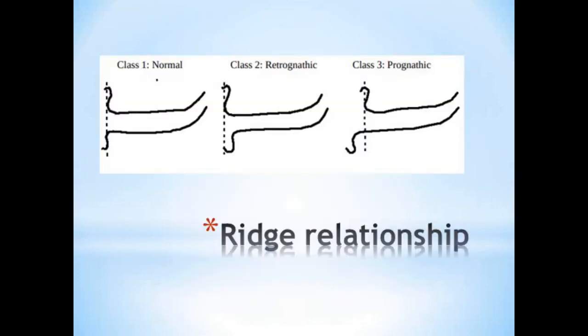Next is the ridge relationship: Class 1 is normal, Class 2 is retrognathic profile, and Class 3 is prognathic profile. You can expect a question on how to set teeth in different ridge relationships — specifically, how to set teeth in retrognathic and prognathic cases to attain balanced occlusion.